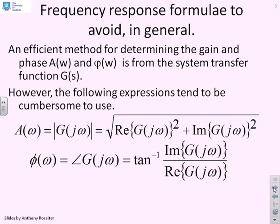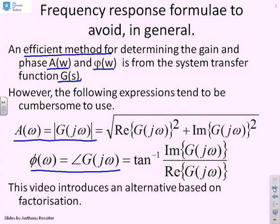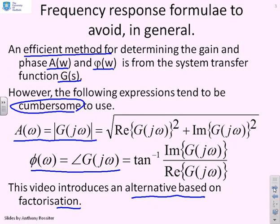The previous video suggested that an efficient method for computing the gain and phase — A(ω) and φ(ω) — is from the system transfer function G(s). We had two relatively straightforward definitions: A(ω) is the modulus of G(jω), and φ(ω) is the argument of G(jω). However, if you use these formulas in a rather crude fashion it tends to be very cumbersome — not something you really want to do on pen and paper or with a calculator. So we're going to look at some alternatives based on factorization which tend to be more insightful and easier to do.